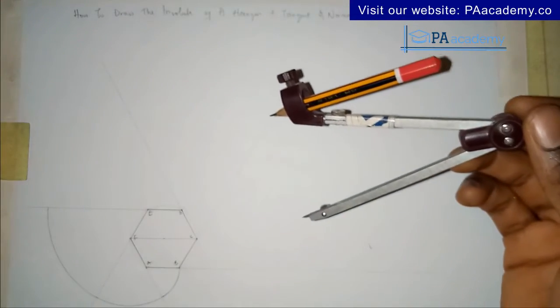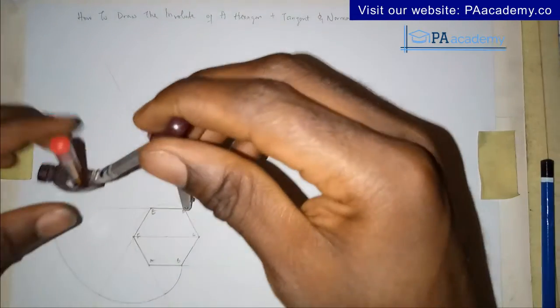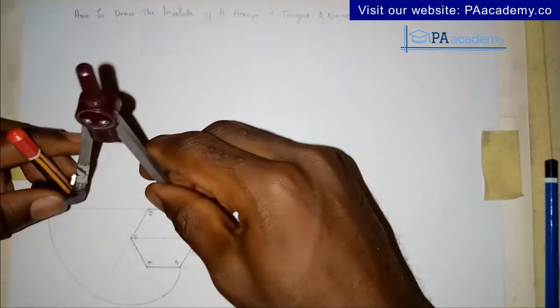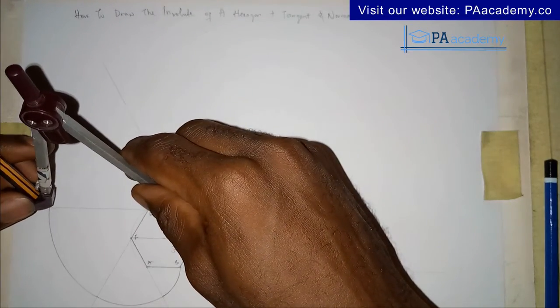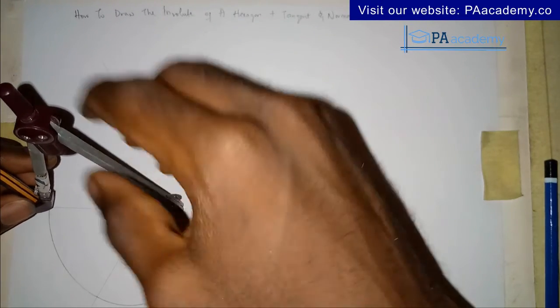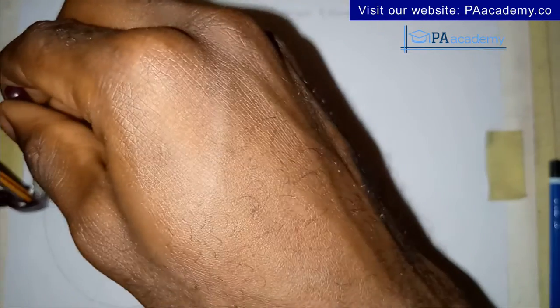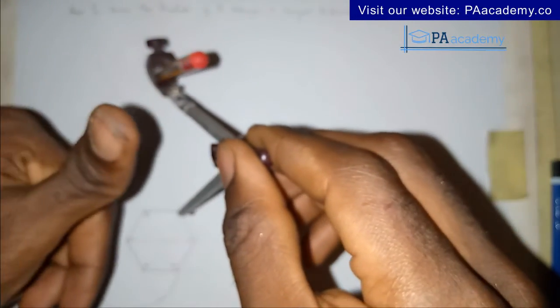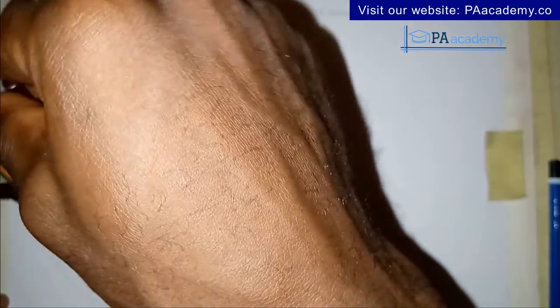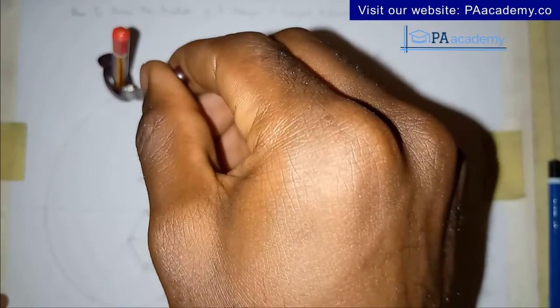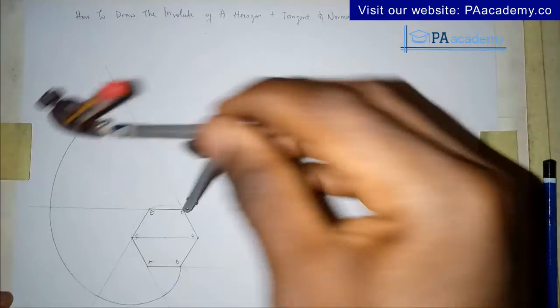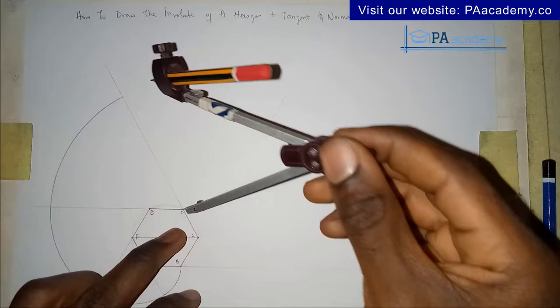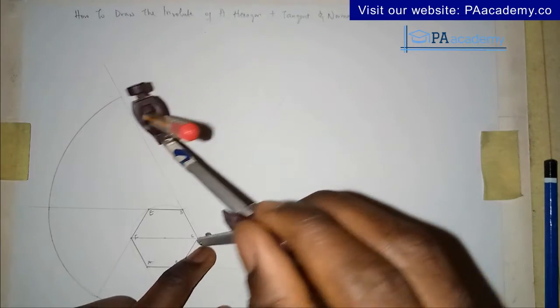That arc is from point E. Now from point D — just keep doing it, follow along. If you are finding value in this video please give it a thumbs up. This arc is from point D. Now we move to point C.